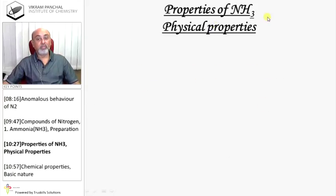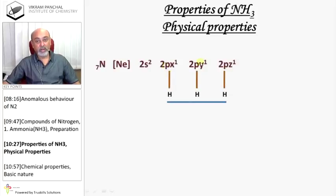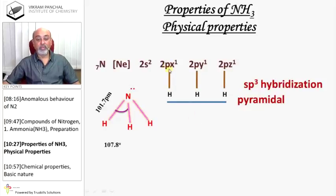Properties of ammonia - Physical properties: Nitrogen has 3 unpaired electrons, so 1 nitrogen joins with 3 hydrogen. SP3 hybridization, pyramidal shape. Nitrogen-hydrogen bond length is 101.7 picometer and bond angle is 107.8 degrees.